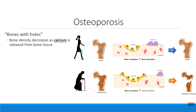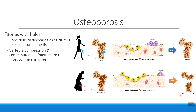But with aging, osteoclasts become more active and osteoblasts slow down. These two things together mean that we're resorbing or breaking down more bone tissue than we're forming. This leads to an increased risk of fractures, especially the kinds called compression fractures, where a bone squeezes down on itself.